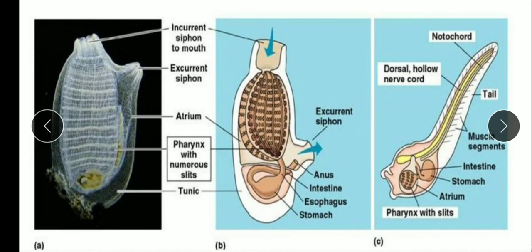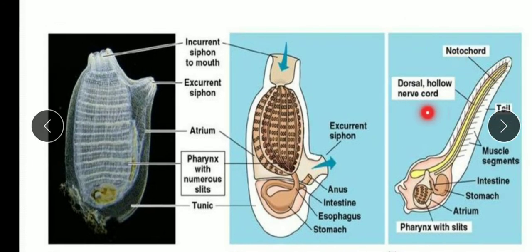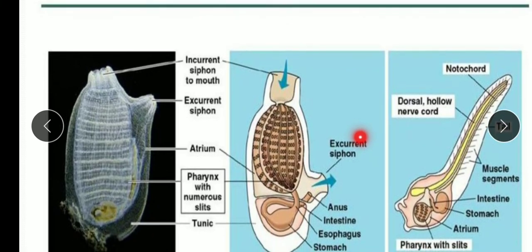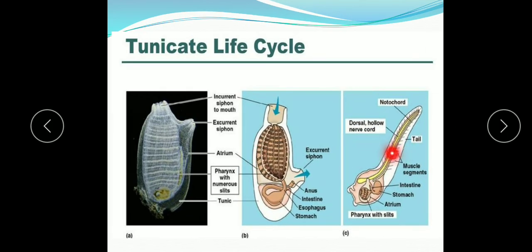As this larval stage undergoes development, the adult loses the notochord and dorsal nerve cord. This reduction is what makes it retrogressive metamorphosis — these developed chordate features undergo reduction when the larva develops into the adult. That is the meaning of retrogressive metamorphosis.